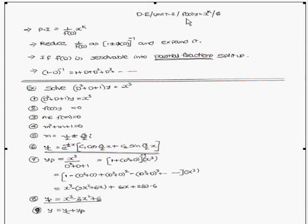Today we are going to discuss model problems of the form f(D)y = x^k. The right-hand side should be x^k. The particular integral is equal to 1/f(D) into x^k. When the right-hand side is x^k, we reduce 1/f(D) as (1 ± φ(D))^(-1) and expand it.